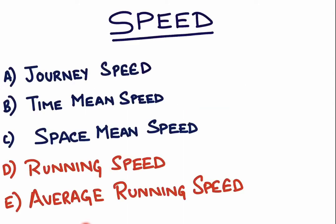In traffic engineering, we see speed as journey speed, time mean speed, space mean speed, running speed, and average running speed. The basic difference between these speeds is the time of reference we take. For journey speed, time mean speed, and space mean speed, we use journey time, while for running speed and average running speed we use running time.